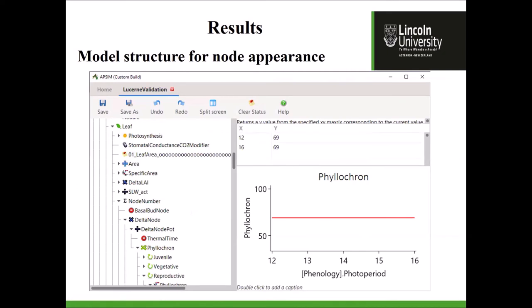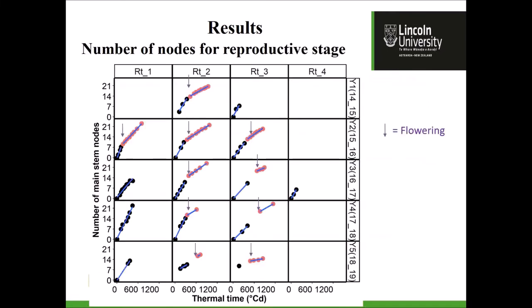A question was raised about what RT1, RT2, RT3 represent — they are rotation one, rotation two, rotation three, and four. The query was why flowering occurs at different numbers of main stem nodes across rotations. For example, rotation one shows flowering around seven or eight main stem nodes, while rotation two shows about ten or eleven. Rotation one is typically in spring, from August to September to October. Rotation two goes into summer when temperatures are high and thermal time definitely reaches the requirement for flowering, plus photoperiod is getting shorter. There is a relationship between photoperiod and the thermal time target for flowering: in shorter photoperiods you require more thermal time to flower, and therefore generally more nodes, because phyllochron remains the same.